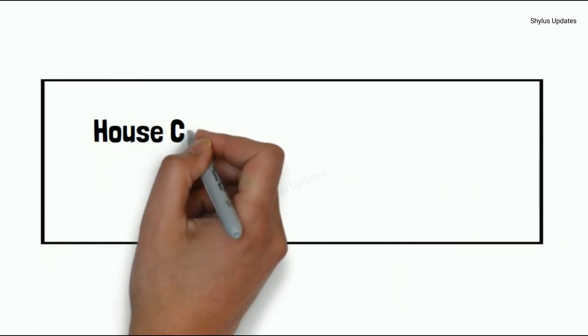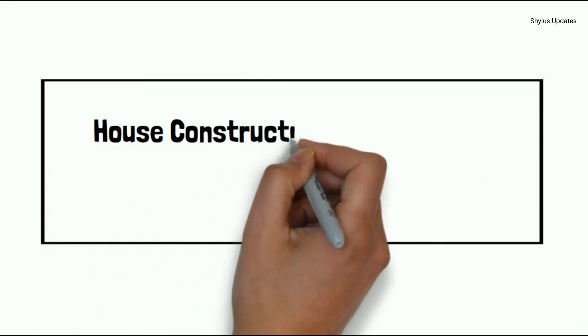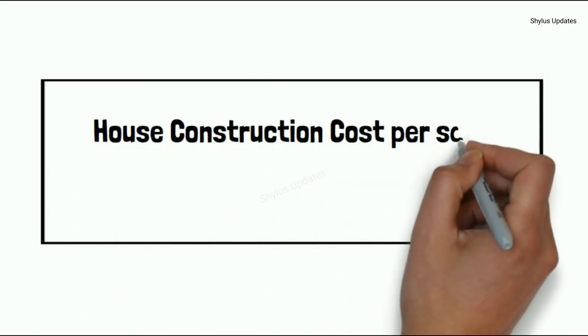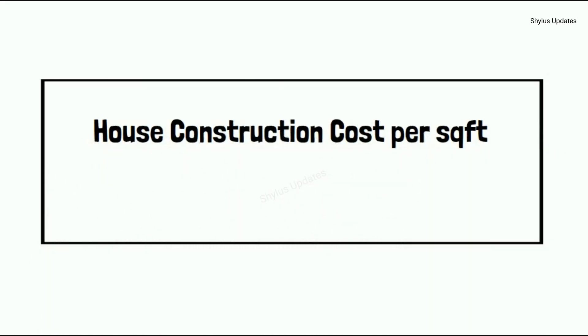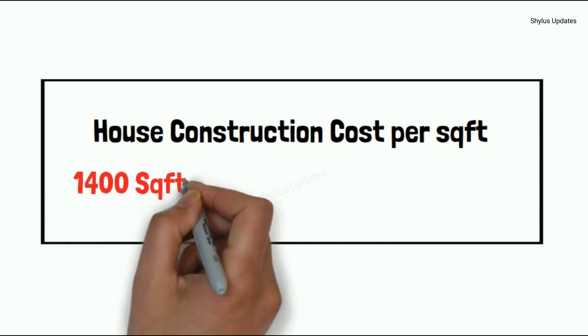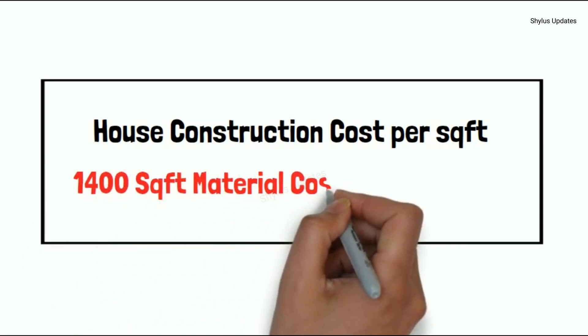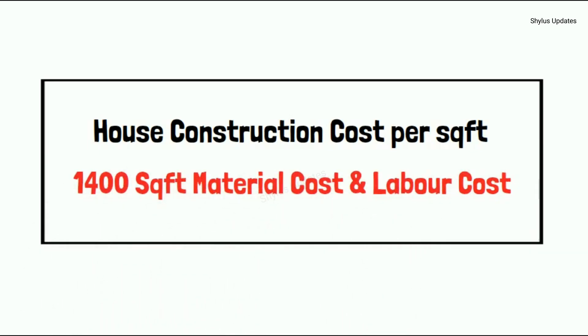House construction cost per square feet for a 1400 square feet house, covering both material cost and labor cost.